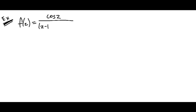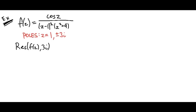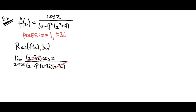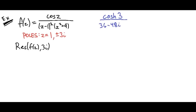Now we're going to do our most grueling example yet — you may or may not ever come across one like this, but it tests whether we know how to do these residues. Our function is cos(z) / ((z − 1)²(z² + 9)). We have three poles: z = 1, z = 3i, and z = −3i. The pole at z = 1 is a pole of order 2. Our integral is going to be the sum of these three residues. For the residue at z = 3i, we take the limit as z → 3i of cos(z) / ((z − 1)²(z + 3i)). Plugging in 3i, we find this equals the hyperbolic cosine of 3 over (36 − 48i). That's a complicated package, so I'm going to move it to the corner to save it for later.